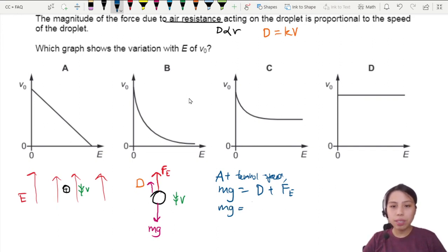D is going to be k times some velocity. At terminal velocity this is going to be v₀. We have v₀ in the equation, that's the first. Electric force, we need it in terms of E, so maybe this will be q times E.